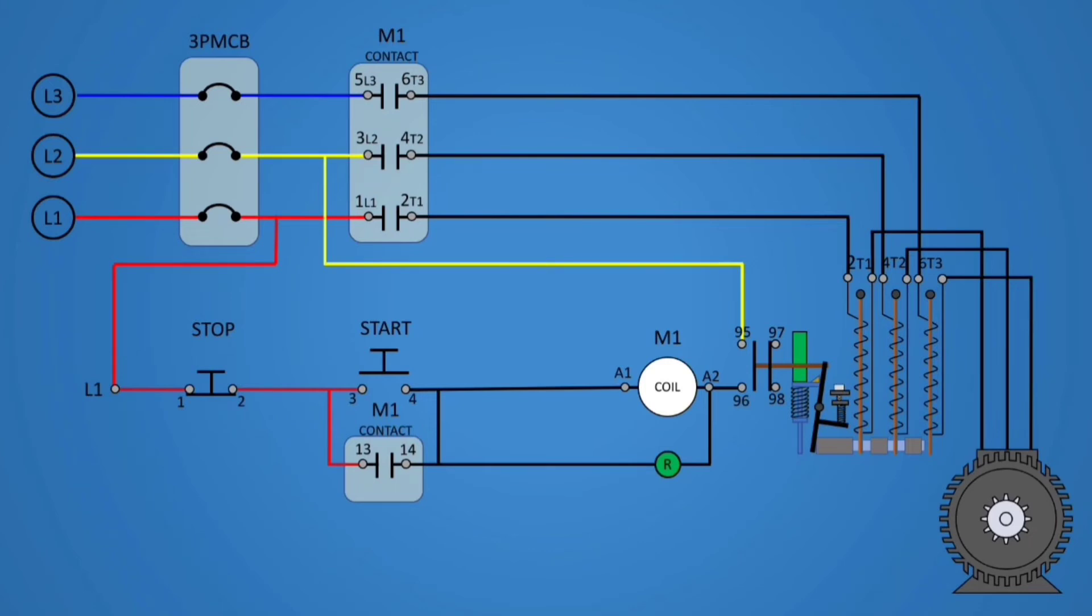After the fault was identified and fixed, the reset button can be pressed to return the position of contacts, lever, and insulated rod to the original position, and back to normal operation.